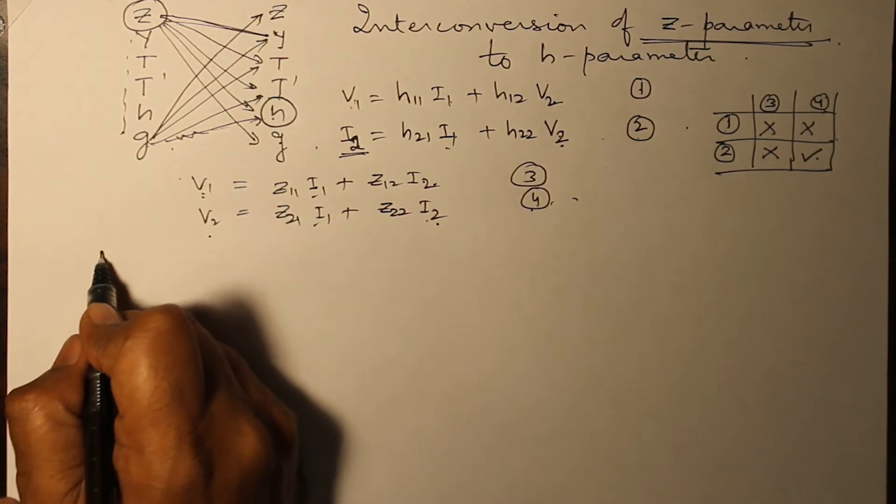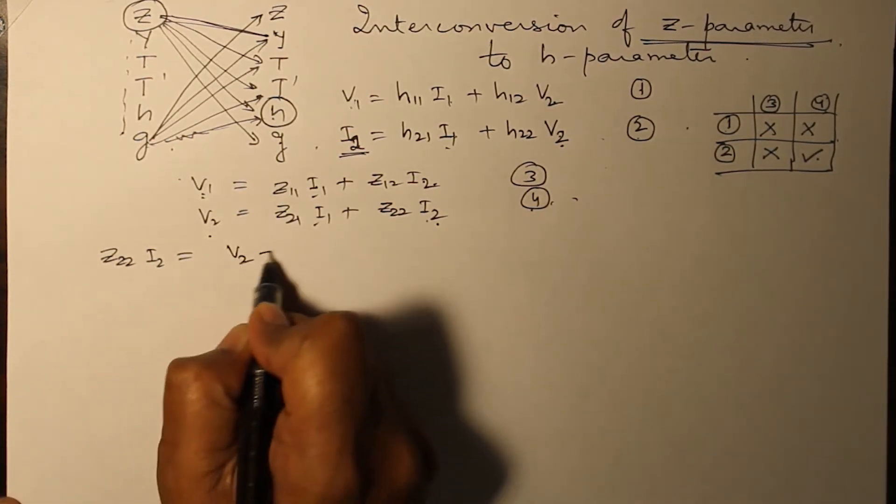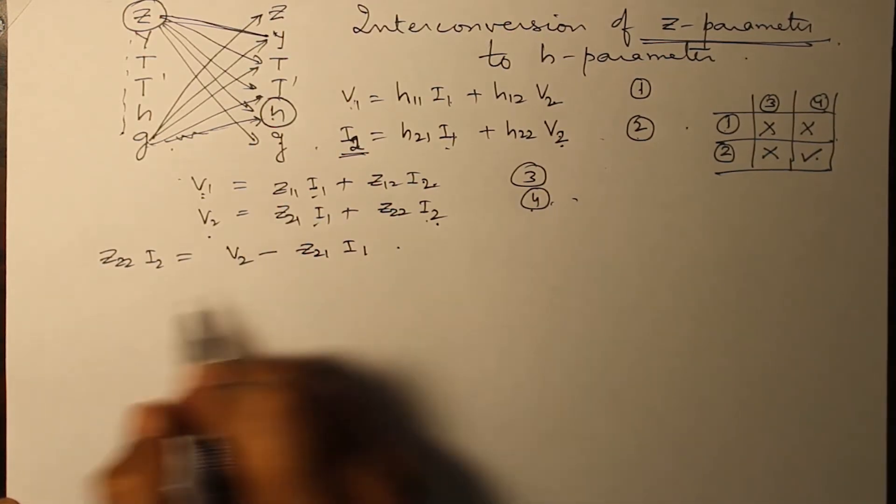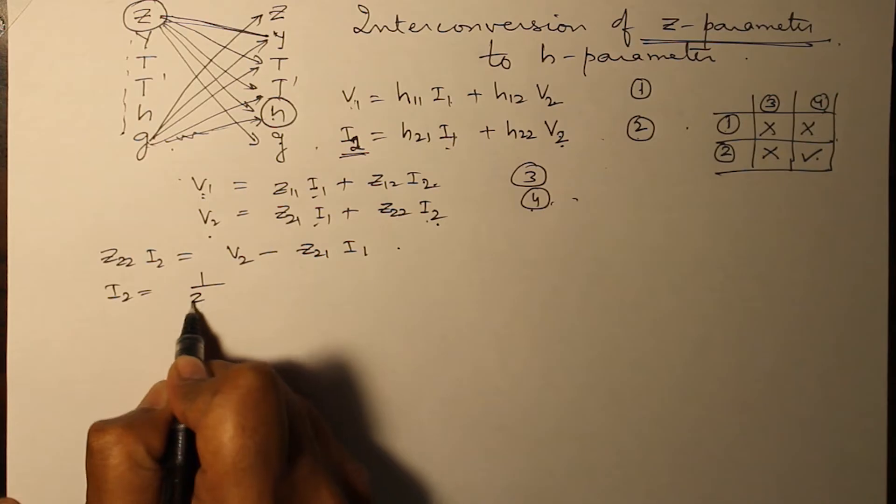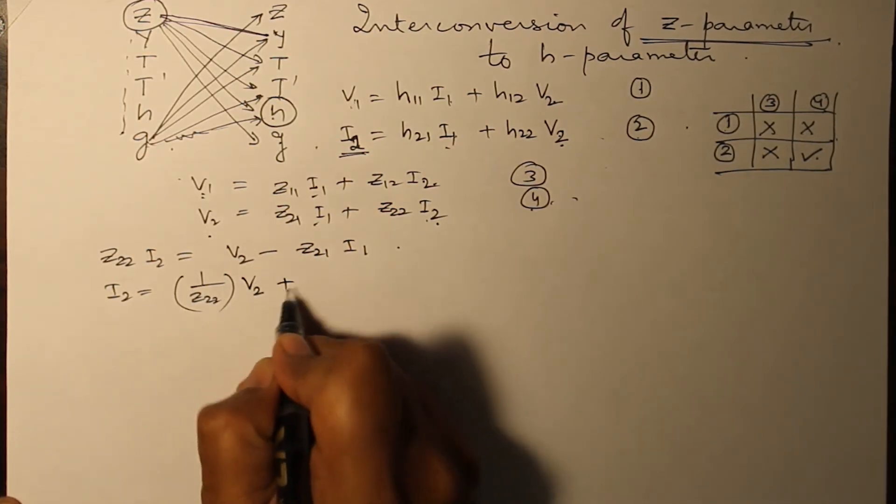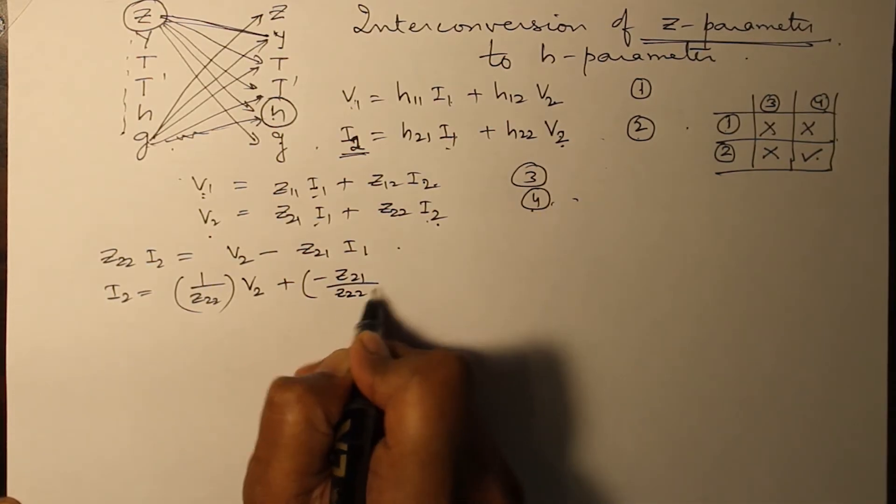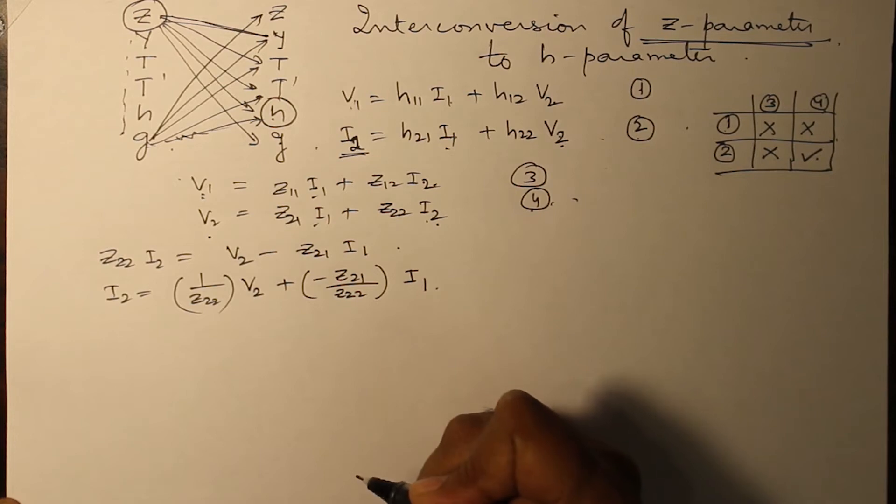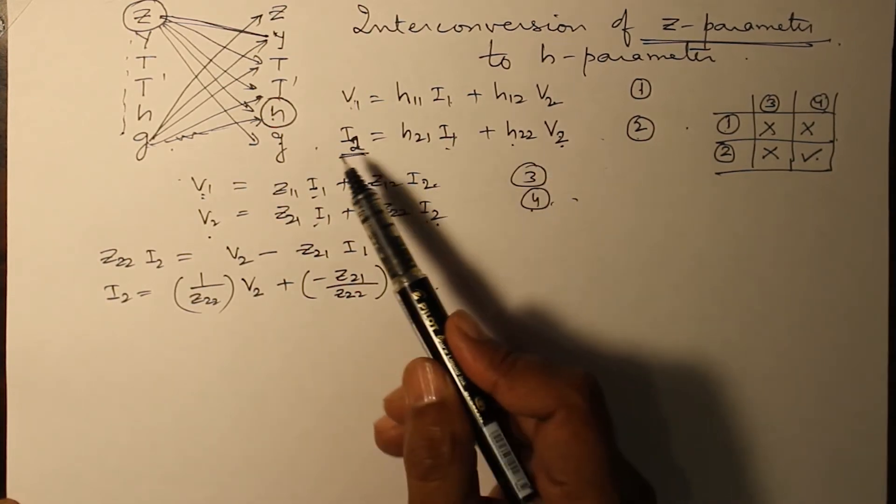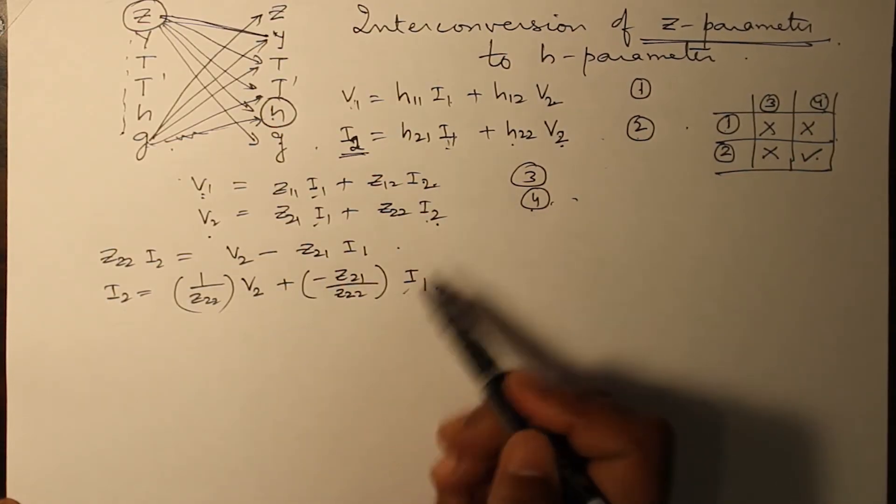So rewriting this equation: Z22 I2 is equal to V2 minus Z21 I1. So I2 becomes one over Z22 V2 plus minus Z21 over Z22 into I1. Compare this equation with equation two. You will find I2 has been expressed in terms of I1 and V2.